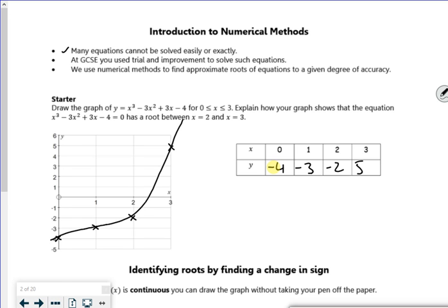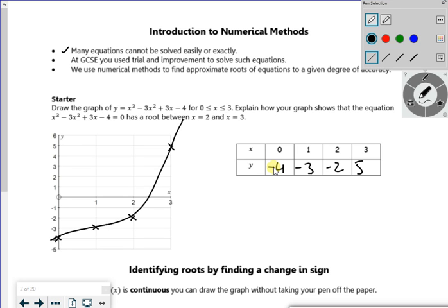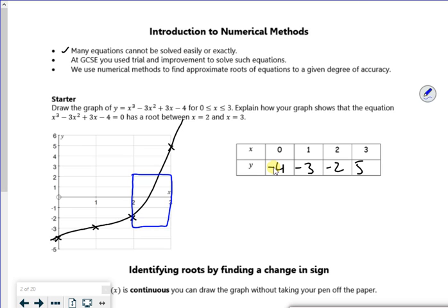And you can tell that there's a root somewhere between 2 and 3. So we know there's a root between 2 and 3. Because f of 2 is less than 0, and f of 3 is greater than 0. So I have a sign change. So because I've got a sign change, I can have a root there.